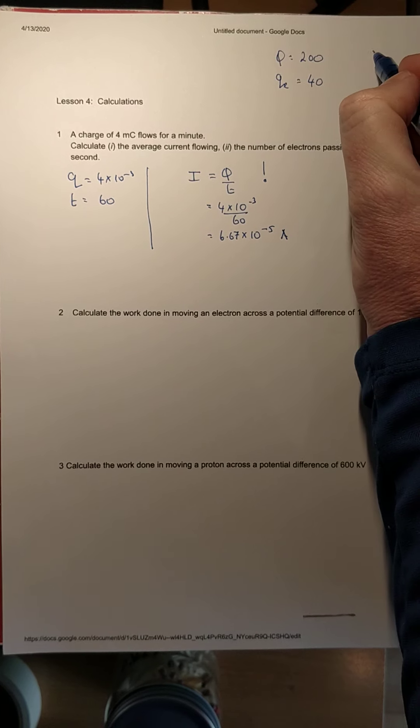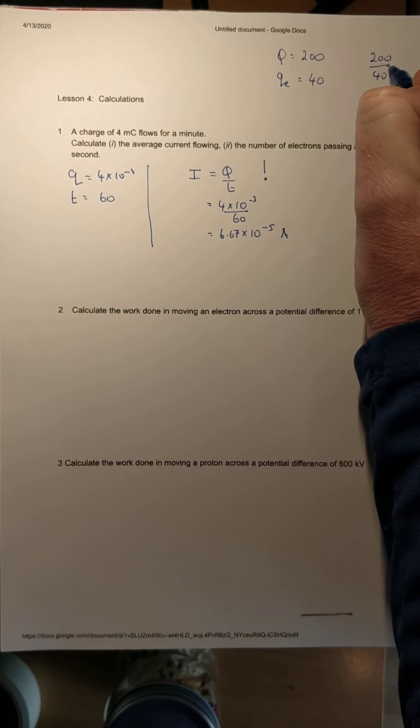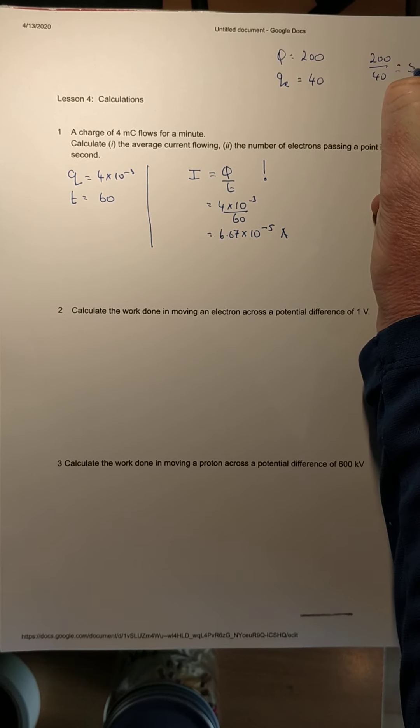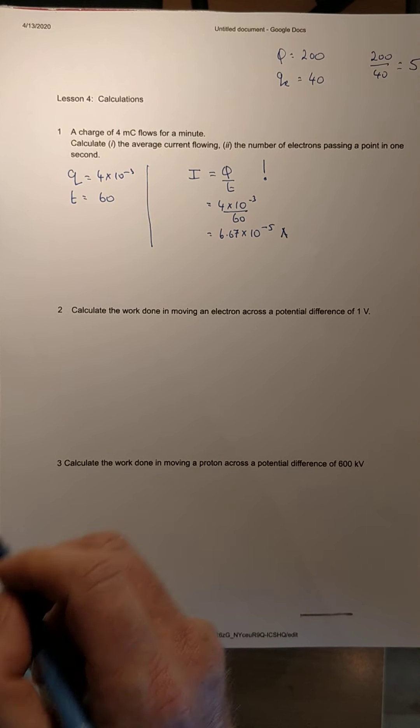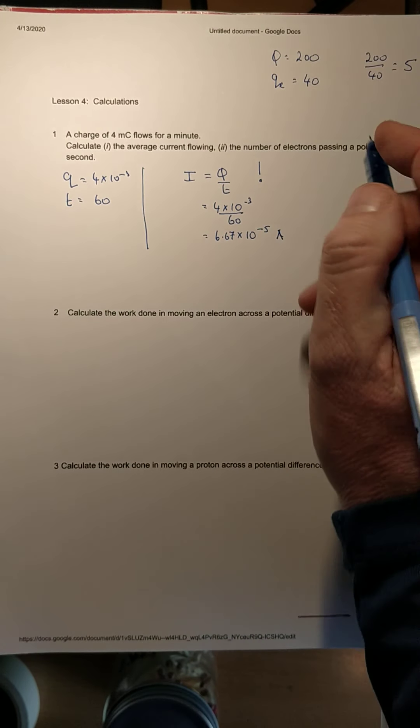It'd be pretty obvious that the total charge is 200, each electron is 40, so you divide the total charge by the charge in the electron and you get an answer of five. That logic follows through to here except the numbers are different.